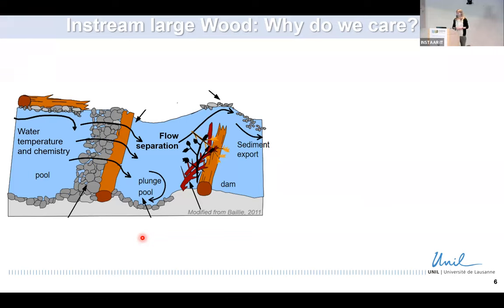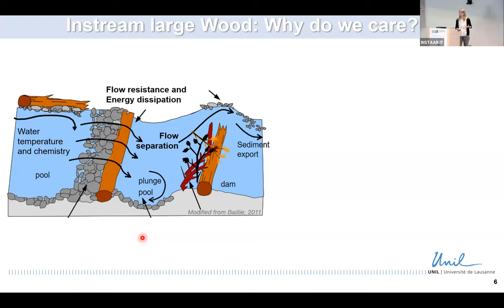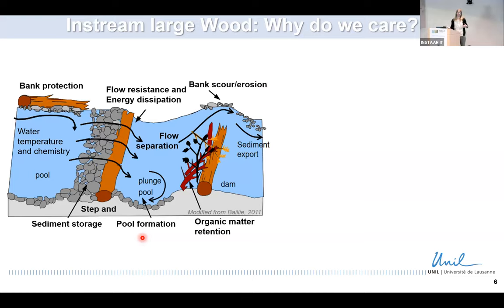A fallen tree creates an obstruction that is a source of flow resistance and energy dissipation, affecting the hydraulics — usually lowering the flow velocity, increasing the water depth, and affecting turbulence. This has an effect on sediment dynamics, influencing sediment storage and sorting. It also affects morphodynamics, potentially enhancing channel mobility, shifting, avulsions, channel widening, and riverbank erosion.